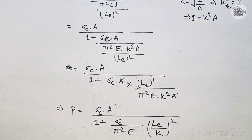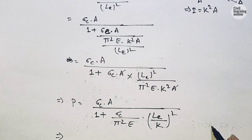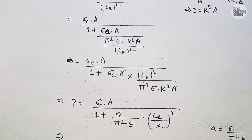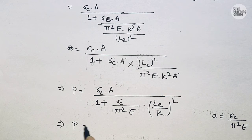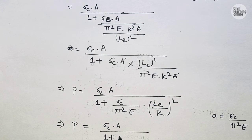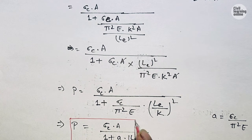We denote Rankine's constant as a = sigma_C / (π²E). The final Rankine's equation is therefore P = sigma_C × A divided by (1 + a × (Le/K)²). This is our Rankine's equation for the crippling load of a column in terms of the effective length.